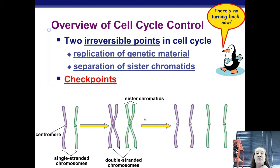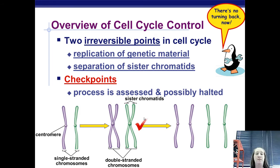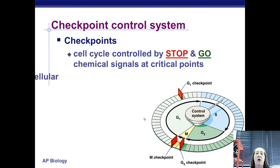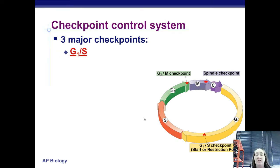The cell has checkpoints that decide: are we ready to replicate this genetic material? And then once everything's gone that far, is it ready to separate? There are three checkpoints — stop and go moments that either say keep going or stop. There's one between G1 and S, one between G2 and M, and the spindle checkpoint.